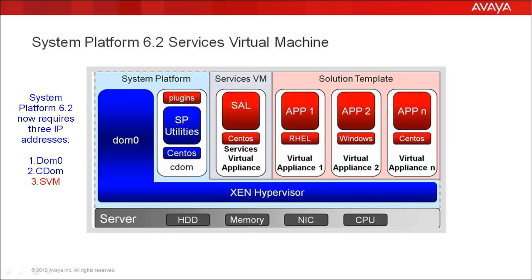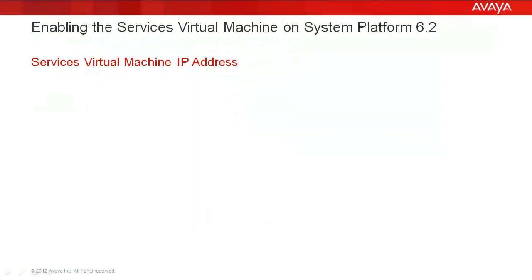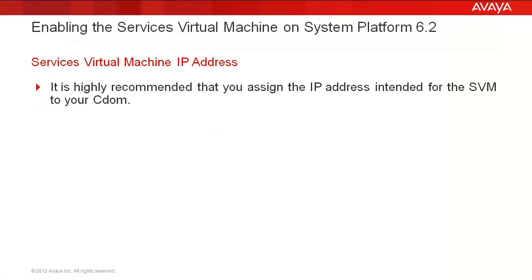Because of this change, the Cell Gateway no longer shares the same IP address as CDOM and now has its own unique IP address assigned to it. It is therefore highly recommended that you first assign this new IP address intended for your SVM to the CDOM Virtual Machine, and then reassign the now relinquished CDOM IP address to your SVM upon enabling it. Doing this will ensure two things.